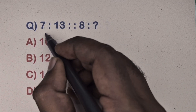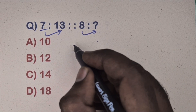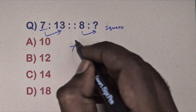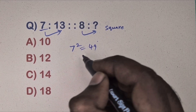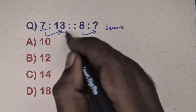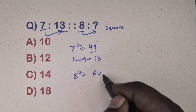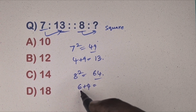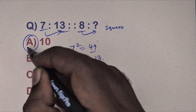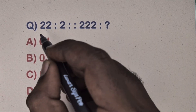Next question: 7 is related to 13, and 8 is related to which number? This is a square relation. Take 7 — 7 squared equals 49, then add the digits of 49: 4 plus 9 equals 13, and 13 is there. Take 8 — 8 squared equals 64, add the digits: 6 plus 4 equals 10. So option with 10 is correct.